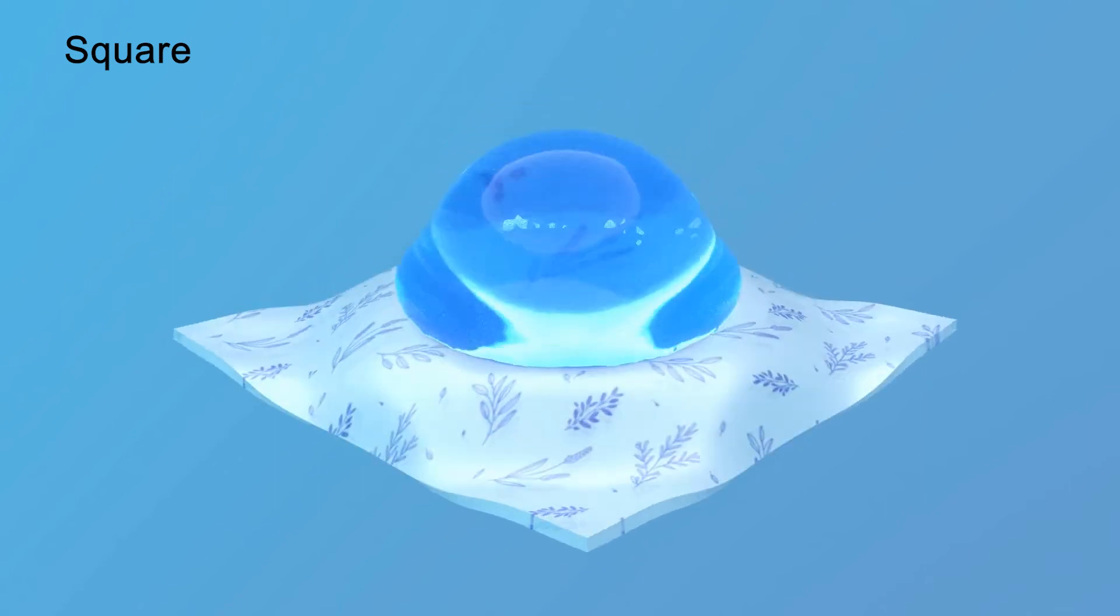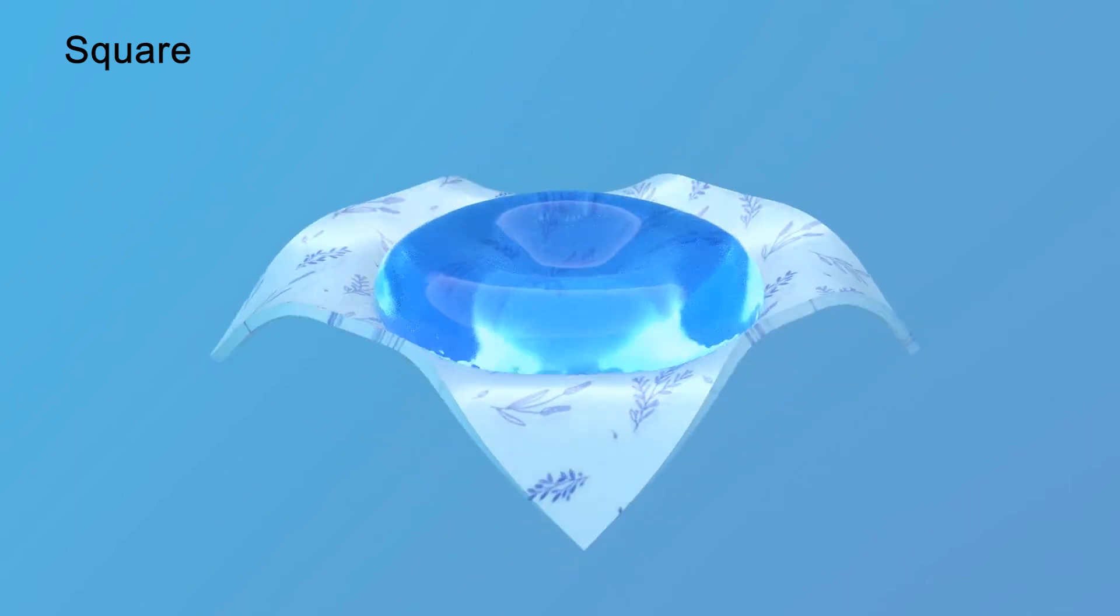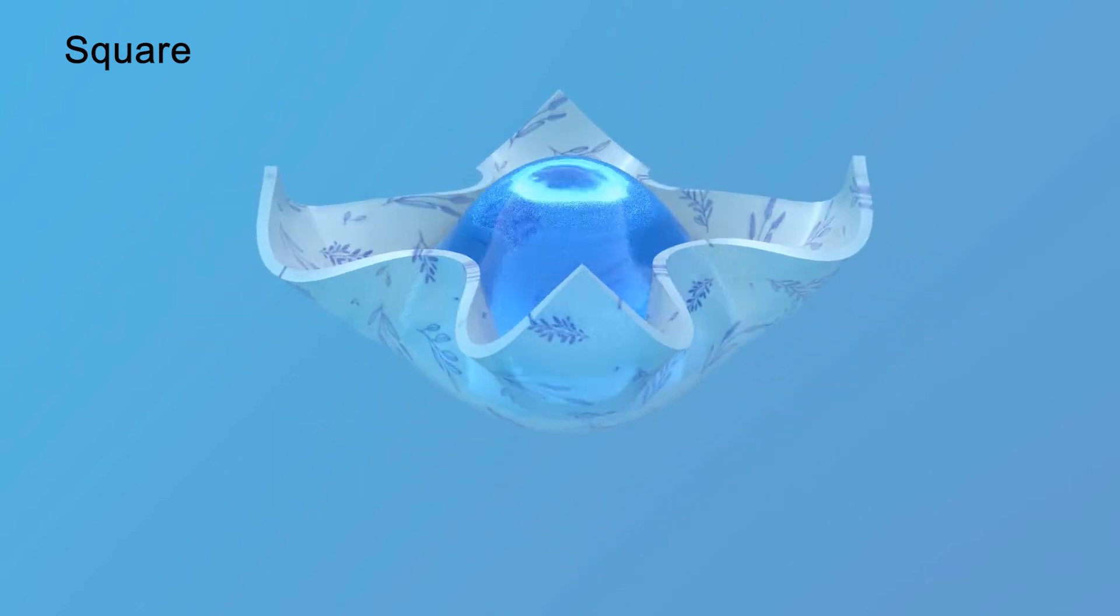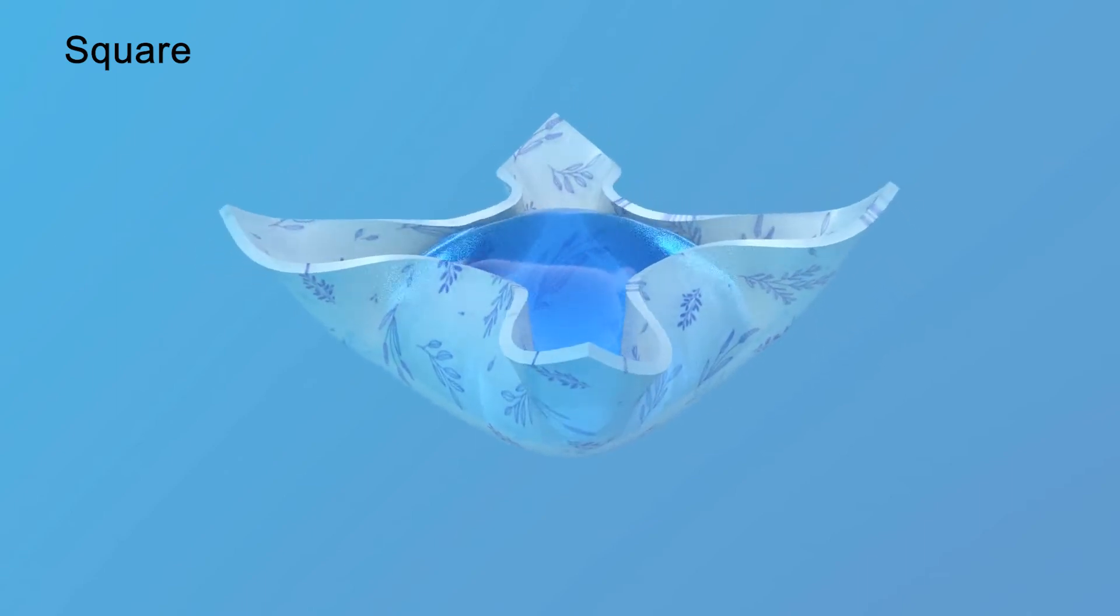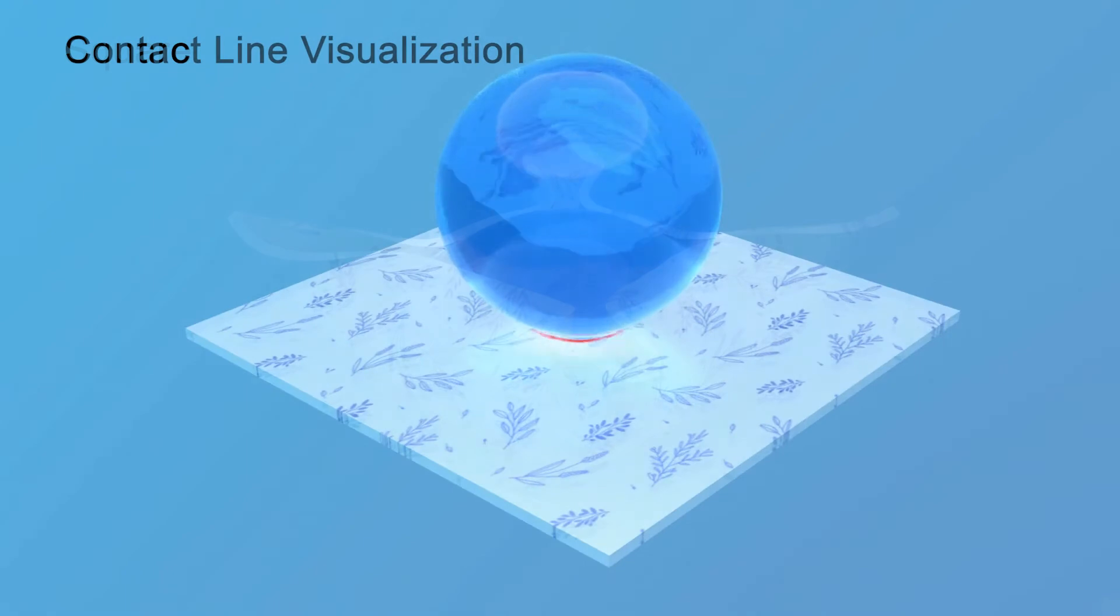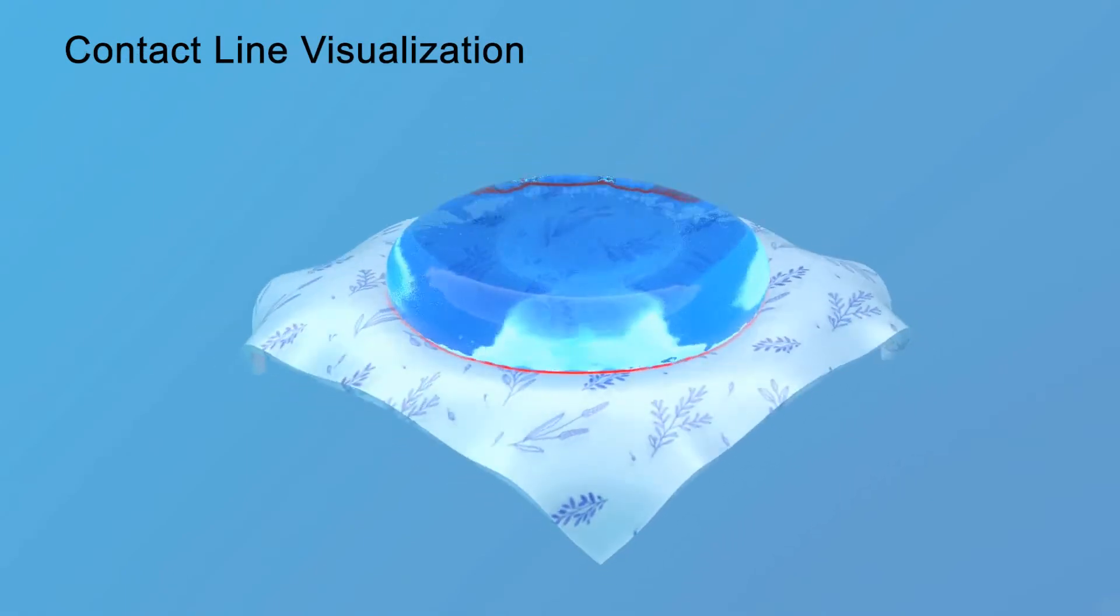Here we show the wrapping of a drop with a square substrate forming a flower-shaped structure. Here we show the same simulation with the contact curve rendered in red.